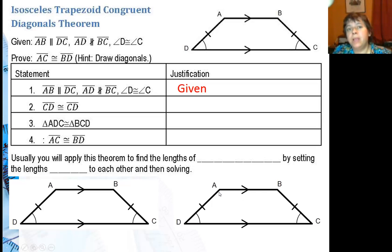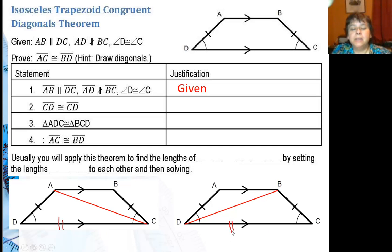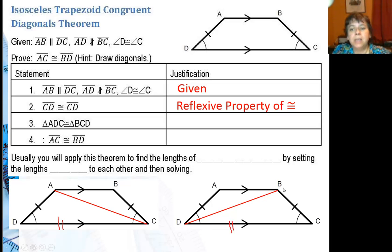I frequently use triangles to prove congruence. So I'm going to go ahead and draw in my diagonals. I can say that CD is congruent to CD — it's congruent to itself by the reflexive property of congruence. I can actually say that triangle ADC is congruent to triangle BCD. I've got that side, that angle, and that side marked congruent to that side, that angle, and that side — that's the side-angle-side theorem for congruence.